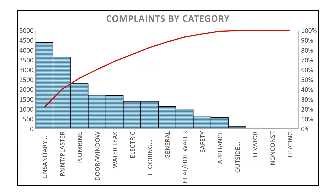Here's another example, which will be walked through in a separate video in Microsoft Excel. Let's imagine you own properties in New York City and you're trying to analyze complaints submitted by your tenants, because you want to minimize those complaints to keep tenants coming back and make your properties desirable. You prioritize the complaints on a Pareto chart, sort it, and you see that a good portion of the complaints are coming from unsanitary conditions and issues with paint and plaster.